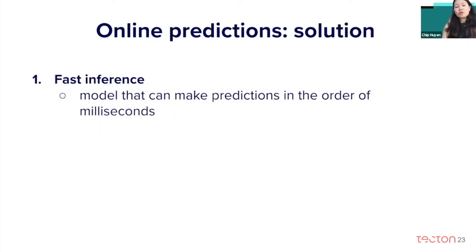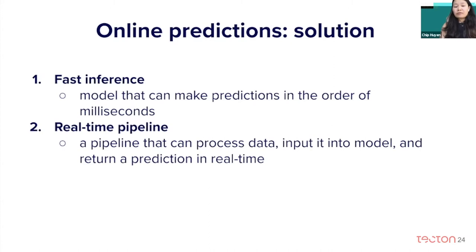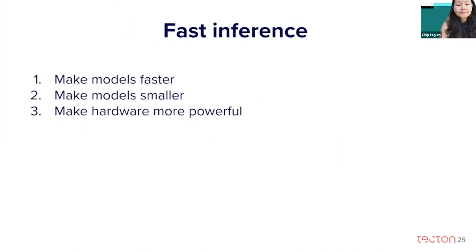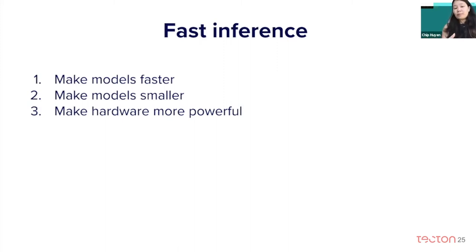To do online predictions, you will need several things. The first is fast inference — a model that can make predictions on the order of milliseconds. The second is a real-time pipeline — a pipeline that can process data, input it into a model, and return a prediction in real-time. For fast inference, there are three main ways: make models faster, make models smaller, and make hardware more powerful.